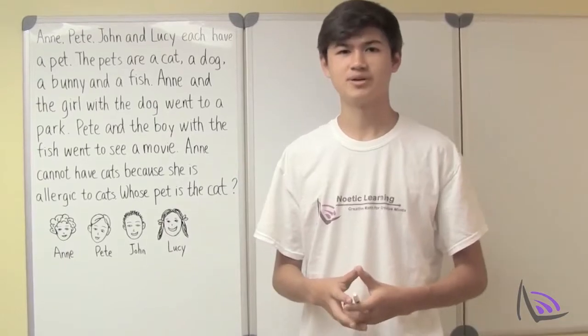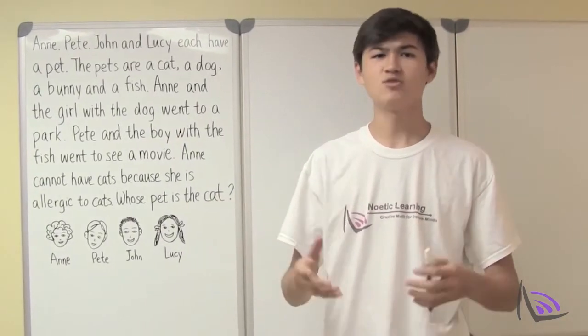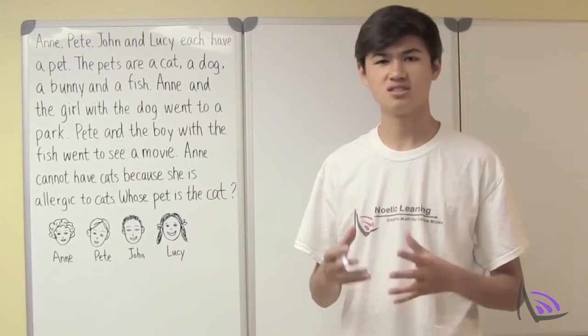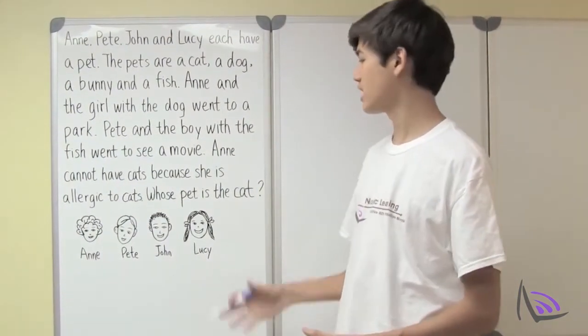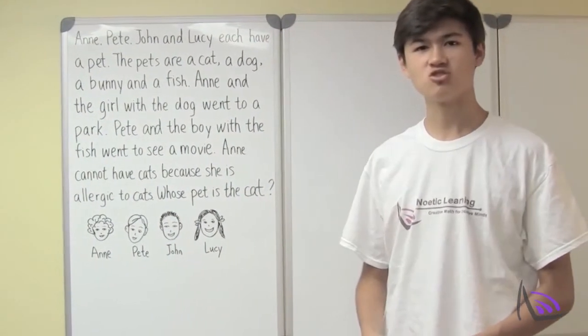They've given us a lot of information but where do we start? Even with all this information none of it tells us a single owner pet pairing. How are we supposed to figure out who owns the cat without any of this essential information?